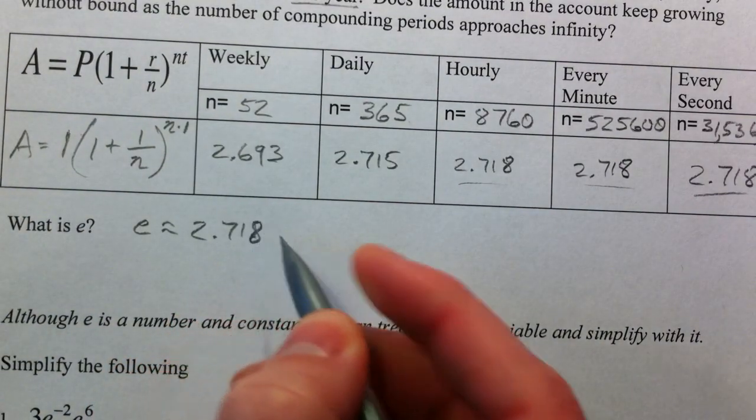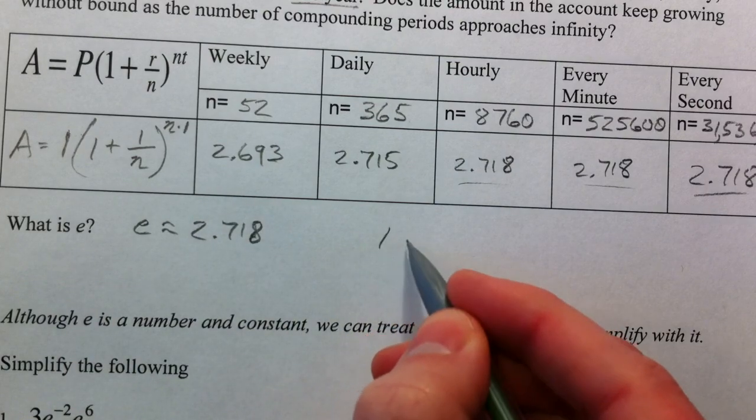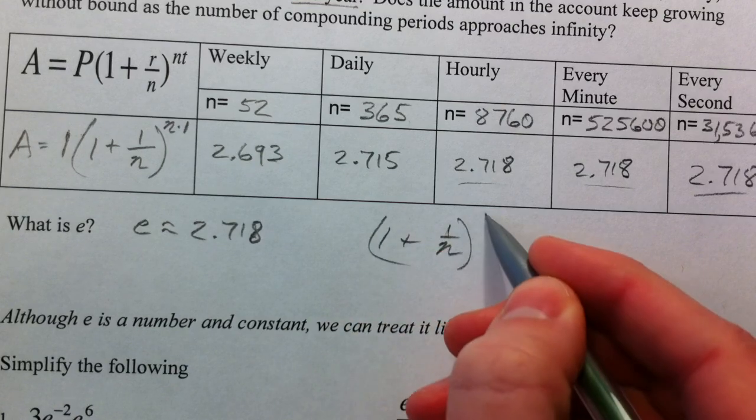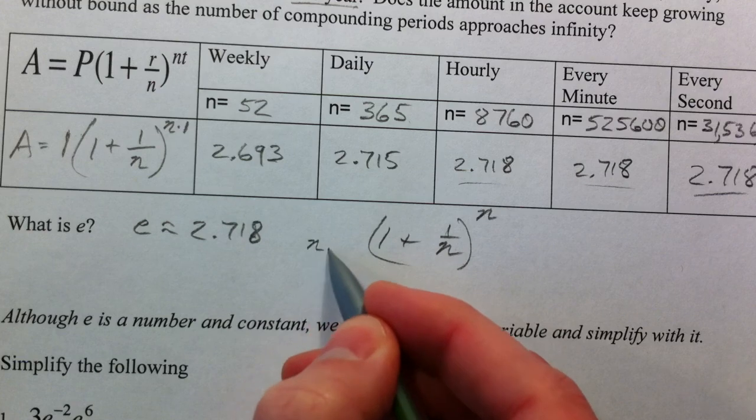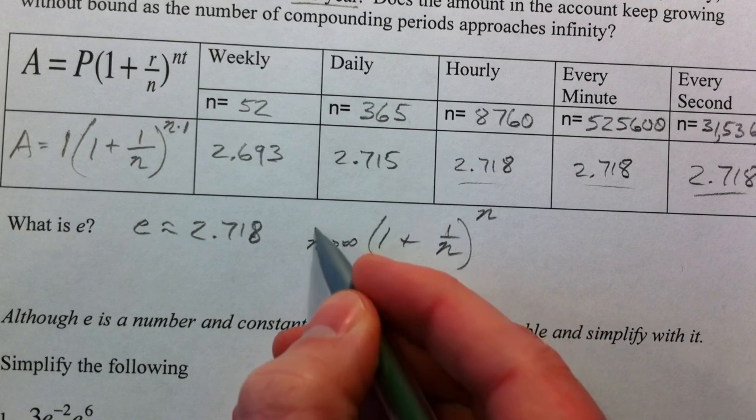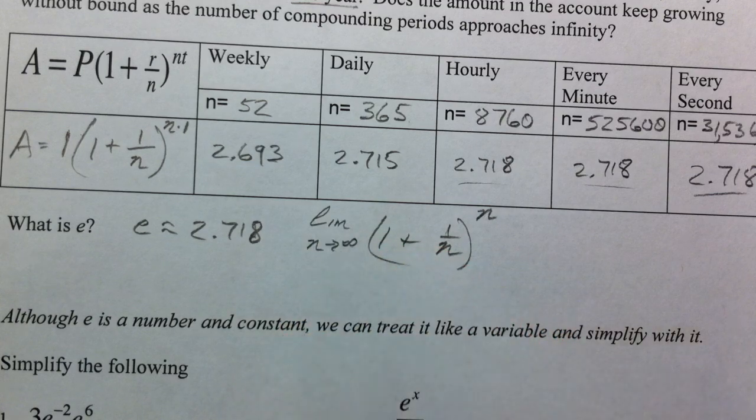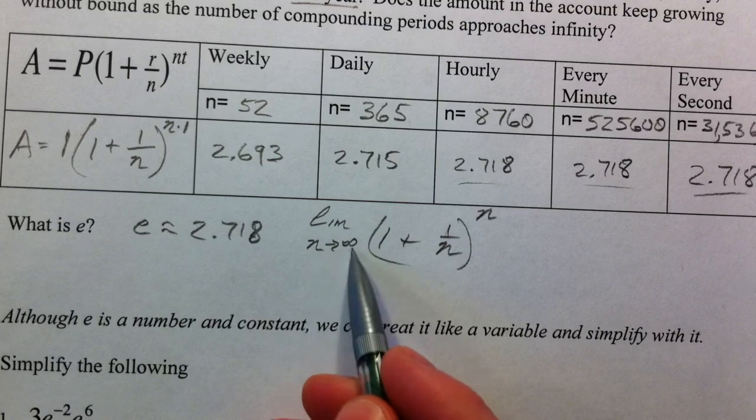And what happens is, as you continue to make N higher, 1 plus 1 over N, raised to the Nth power, if you make N go to infinity, and that's the limit. This is a little bit above what we're doing, but limit as N goes to infinity.